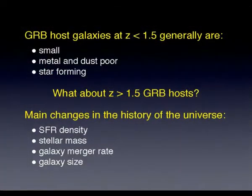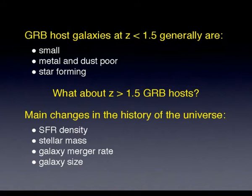What do we know from this sample? What we know is mainly from the low-redshift sample, below redshift 1.5. GRB hosts are generally small, metal-poor, not much dust apparently, and star-forming. We want to know: is this typical for the entire universe and the population of galaxies, and is it actually changing with redshift? What happens at higher redshift?